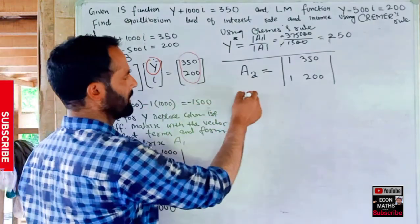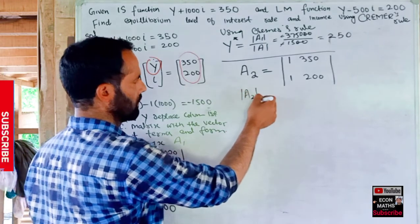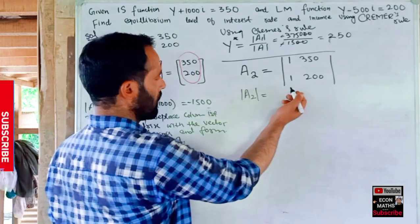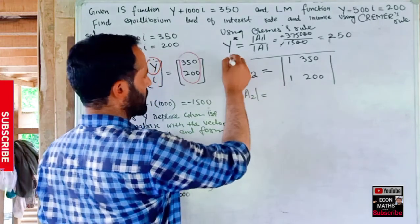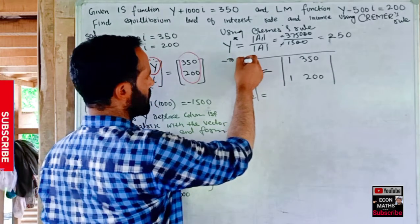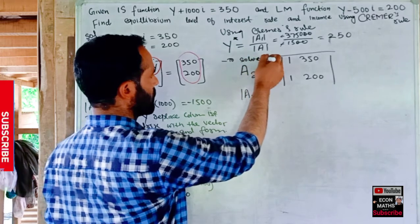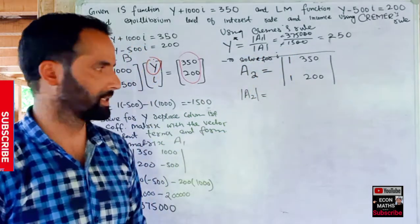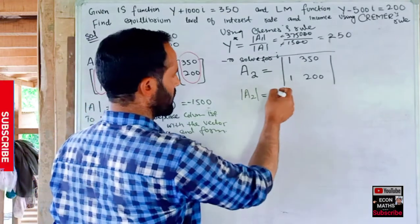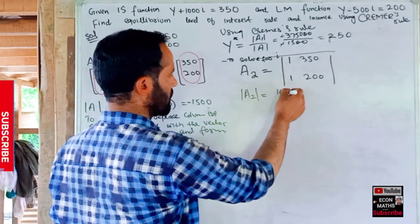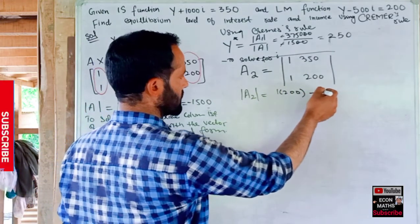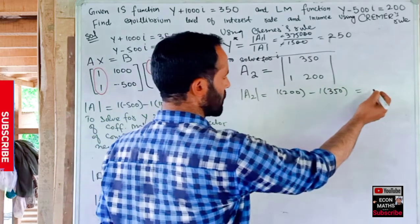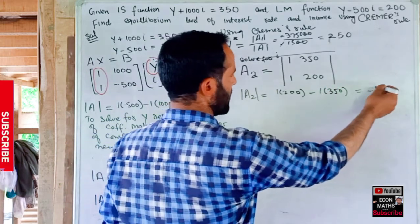We take the determinant of A2. Solving for I: the determinant equals 1×200 − 1×350 = 200 − 350 = −150. So det(A2) = −150.